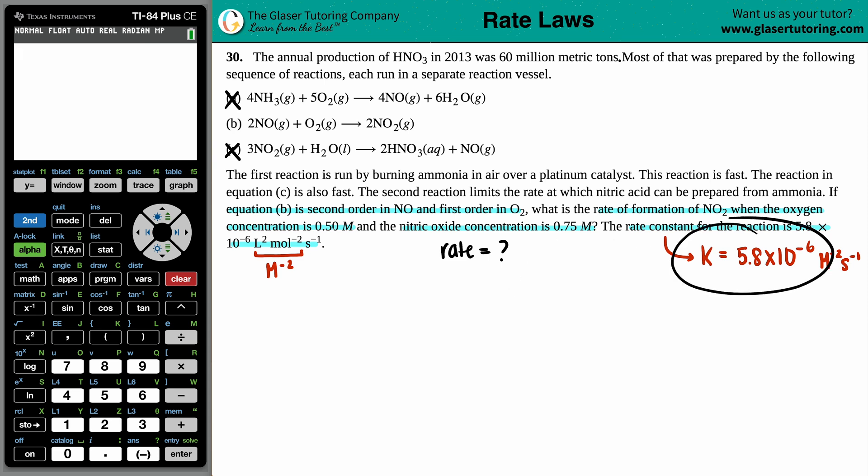Now, if they're asking for a rate, and they're giving you a rate constant, that's enough pieces of information to know what formula we're using. And in this case, we're going to be using the generalized rate law formula, which is this right here. Rate equals K, that's the rate constant, times the concentration of the reactants raised to their orders.